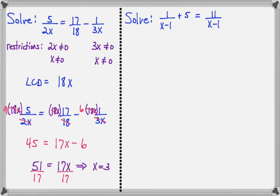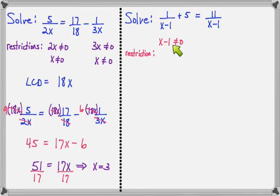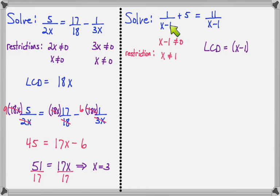Here is one more example: 1/(x-1) + 5 = 11/(x-1). Our restriction is that x - 1 cannot equal zero, so x cannot equal 1. If we solve this and find that 1 is supposed to be the solution, we'll have to throw it out. The common denominator is just x - 1, since that's the only denominator that appears.